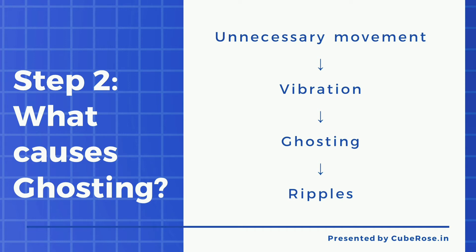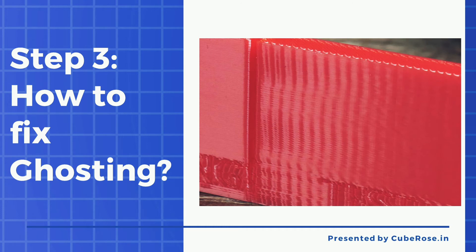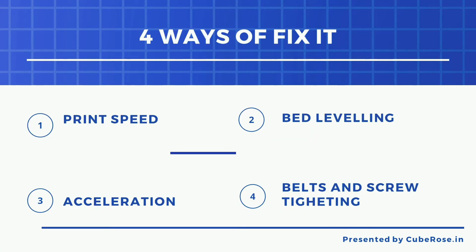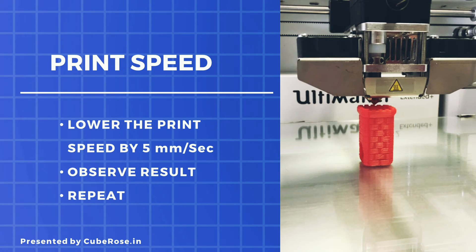How to stop ghosting in 3D printing? Since you now understand why ghosting occurs, it will be easier to find solutions. There is no single solution for eliminating ghosting — you must follow a few things to completely fix it. The first tip is print speed. It might not sound like a reliable solution but it works. I tested my 3D print at 30 mm/sec, then lowered the speed to 20 mm/sec. It gave a slightly better result, though it didn't fully fix the problem. I would suggest you lower your print speed a little from your average speed — try to reduce it by 5 mm/sec and observe how it works.